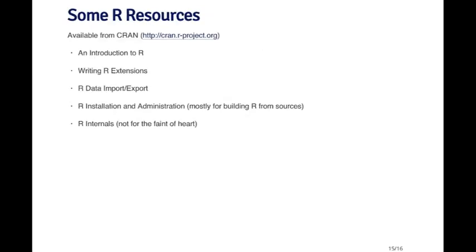There are a couple of documents you can find on the R website as you're learning to use R. One is An Introduction to R, a relatively long PDF that goes through the basics of how to use R and the language. There's the Writing R Extensions manual, useful if you're thinking of developing R packages. The R Data Import and Export manual is useful for getting data into R in various ways. The R Installation and Administration manual is mostly useful if you want to build R from source code. And the R Internals manual is a really technical document for how R is designed at a very low level — not for the faint of heart, but great if you want to know how R works at a deep level.